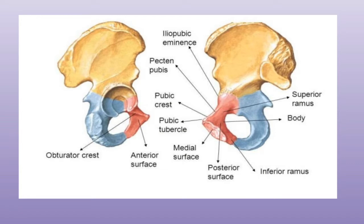The upper end of the ischium forms the posterior two-fifth part of the acetabulum. The acetabulum is actually formed by the ilium, ischium, and the pubis, and the ischium has the two-fifth portion of this particular acetabulum.